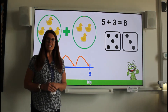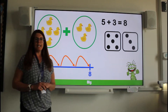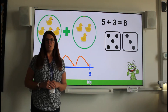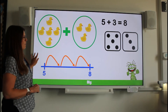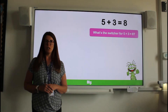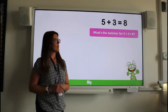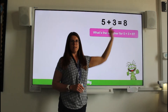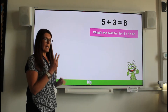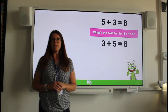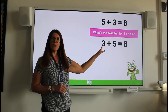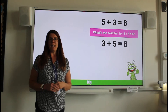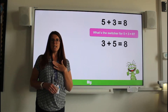When we add two numbers together it doesn't matter which number we start with — the answer is always the same. That is called a switcher. If we have a look at our calculation: five add three, the answer is eight. However, if we switched those two numbers and started with three add five, the answer would still be eight. That is called a switcher.